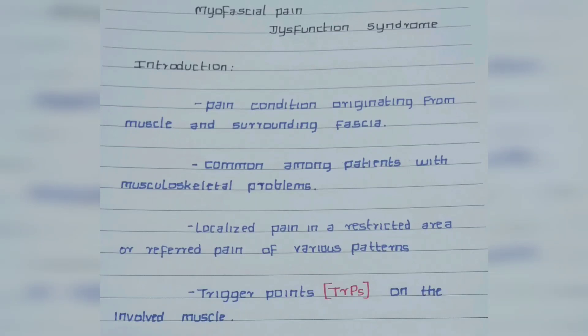Myofascial pain dysfunction syndrome is a pain condition originating from the muscles and its surrounding fascia. It is common among patients who have musculoskeletal problems. It is mainly due to trigger points which act upon the involved muscle and may also lead to referred pain. It is a localized pain in a restricted area, or it may be referred pain of different patterns. These trigger points are tender spots in the muscle which cause pain and transmit it to other areas.